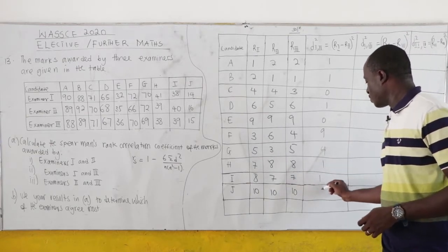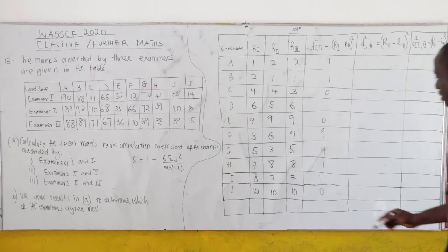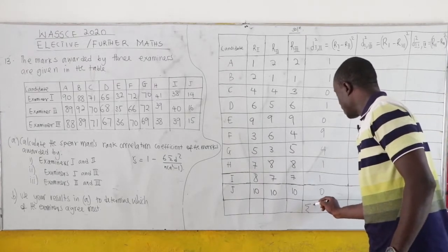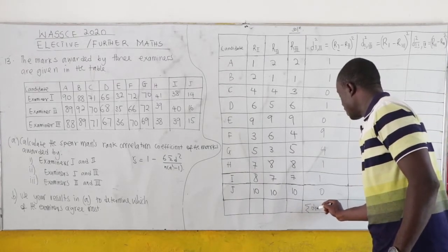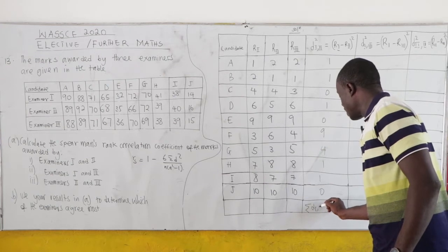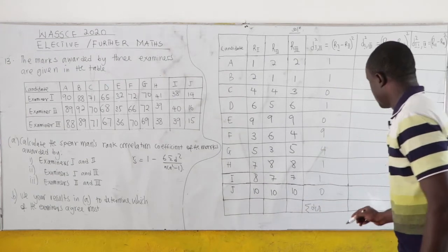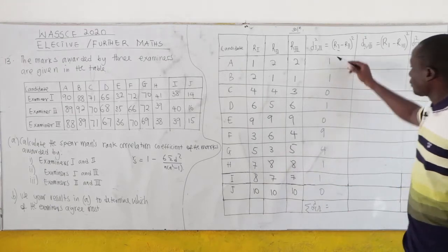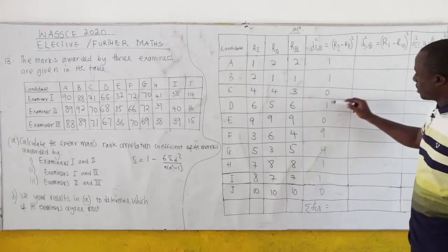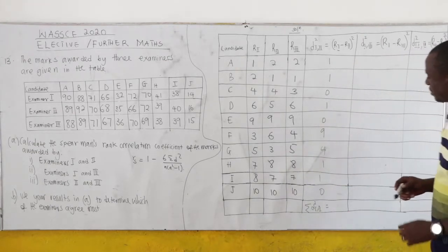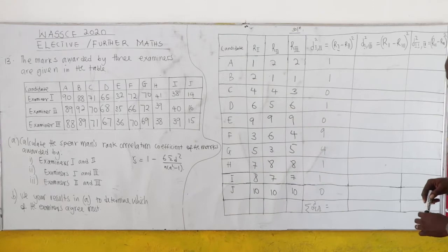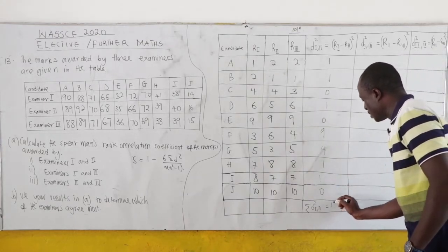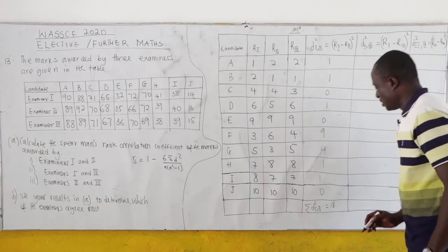Summing all squared deviations for examiners 1 and 2: 1 + 1 + 0 + 1 + 0 + 9 + 4 + 1 + 1 + 0 = 18. So ΣD²(1,2) = 18.